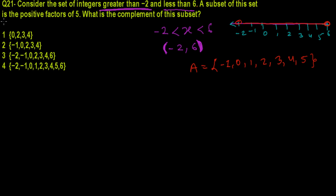Now we finished writing the set till here. Now a subset of this set is positive factors of 5. So we need to write a subset of A. Let's say I'm going to write the subset B. B is subset of A.